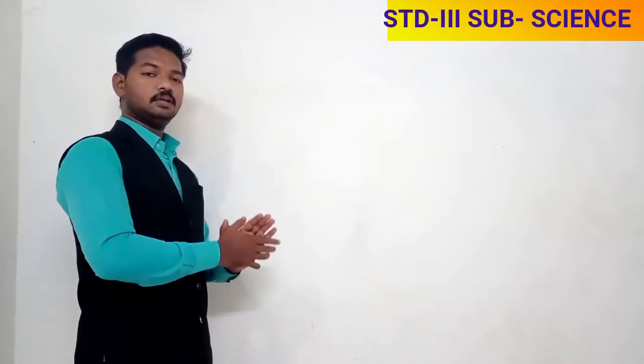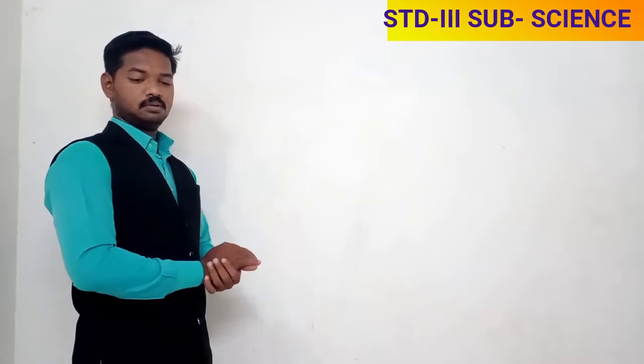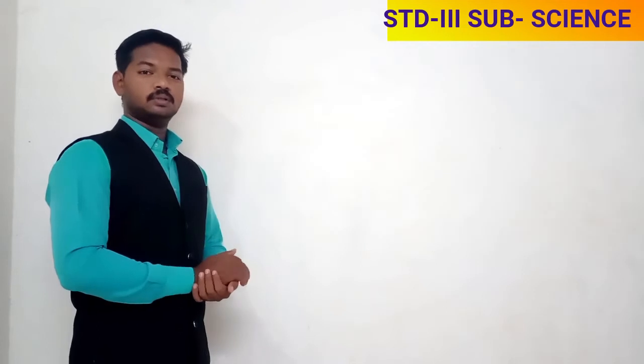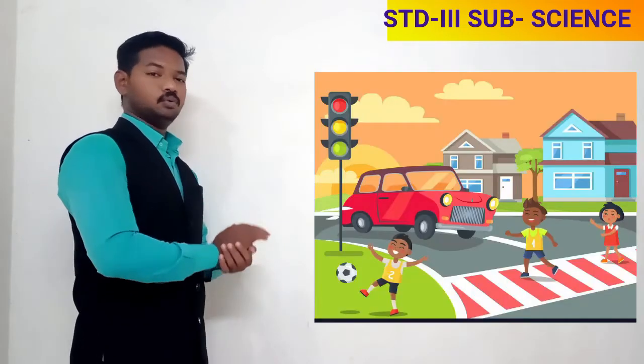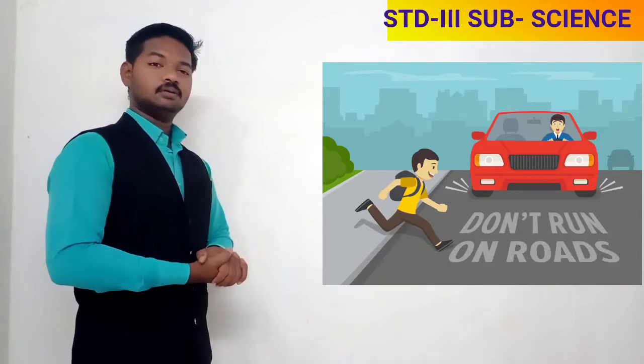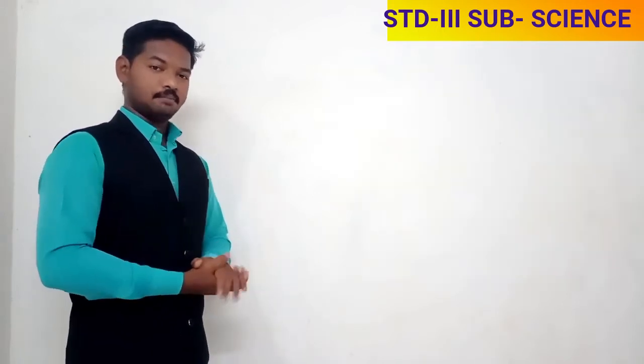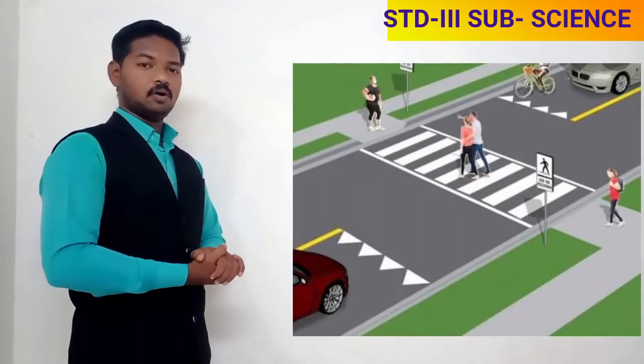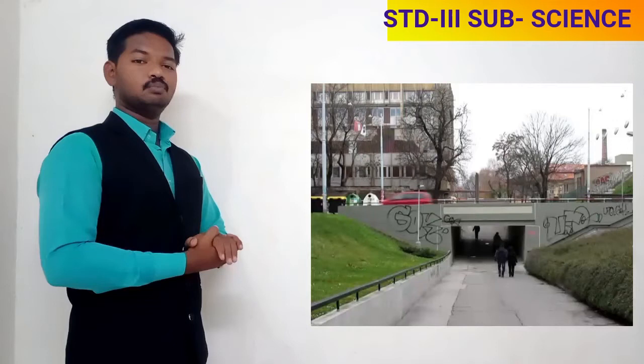Number one: always walk on the footpath. Number two: never play on the road. Number three: do not run across the road. Number four: always use zebra crossing, foot over bridge, or subway to cross the road.